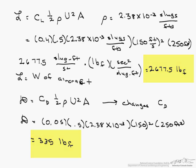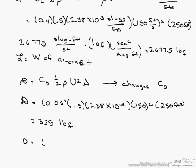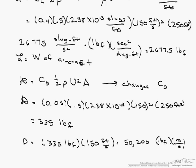So how do we get the power from that? So the power is going to equal our 335 pound force times our velocity, which is 150 feet per second, which equals 50,200 pound force times feet per second.